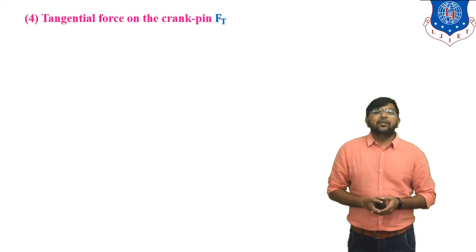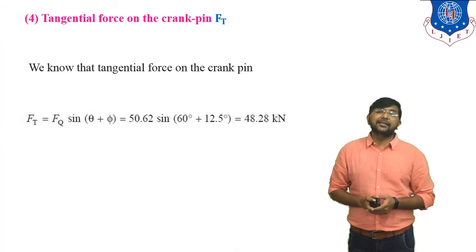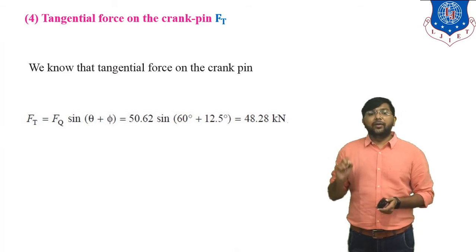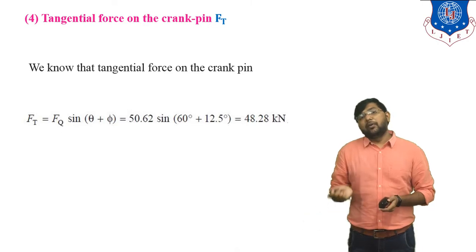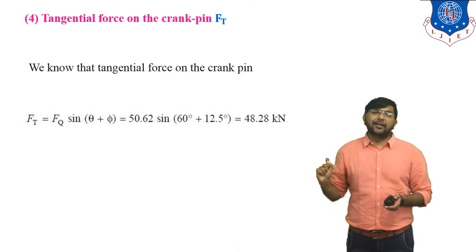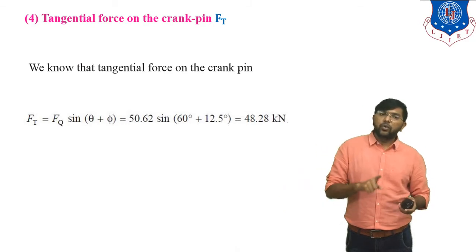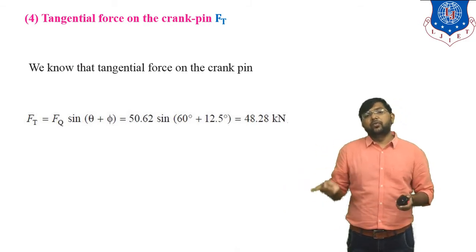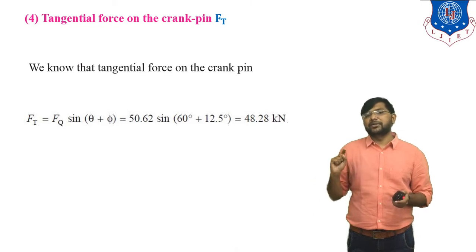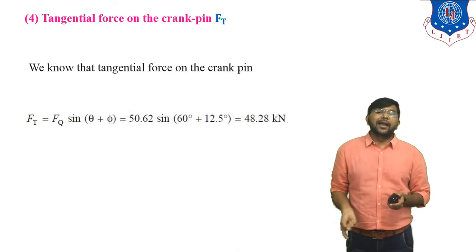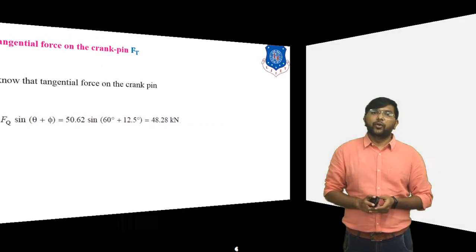Now, the tangential force on the crank pin: F_t = F_q × sin(θ + φ). Substituting F_q = 50.62 kN, θ = 60°, φ = 12.5°: F_t = 50.62 × sin(60° + 12.5°) = 48.28 kN.